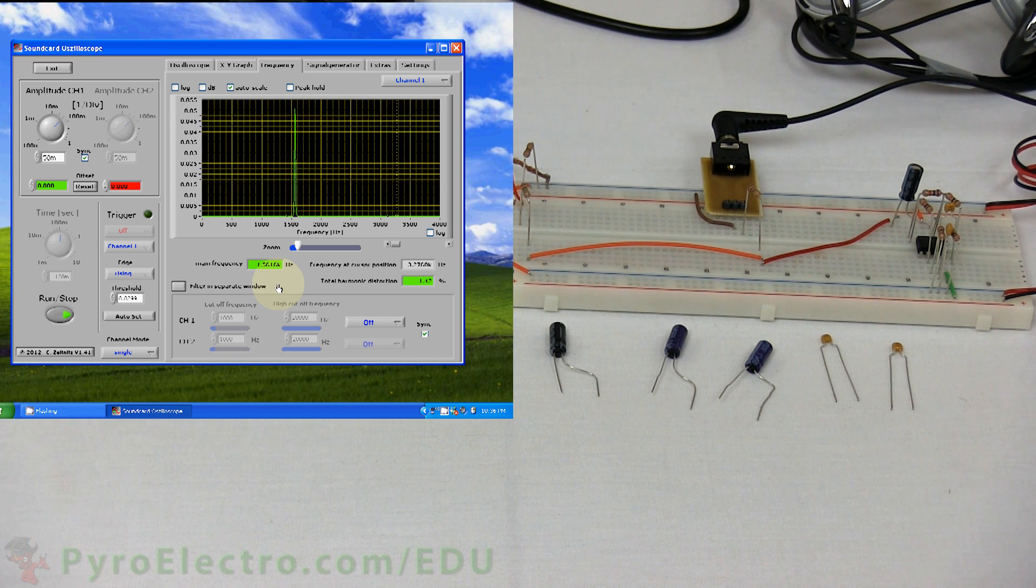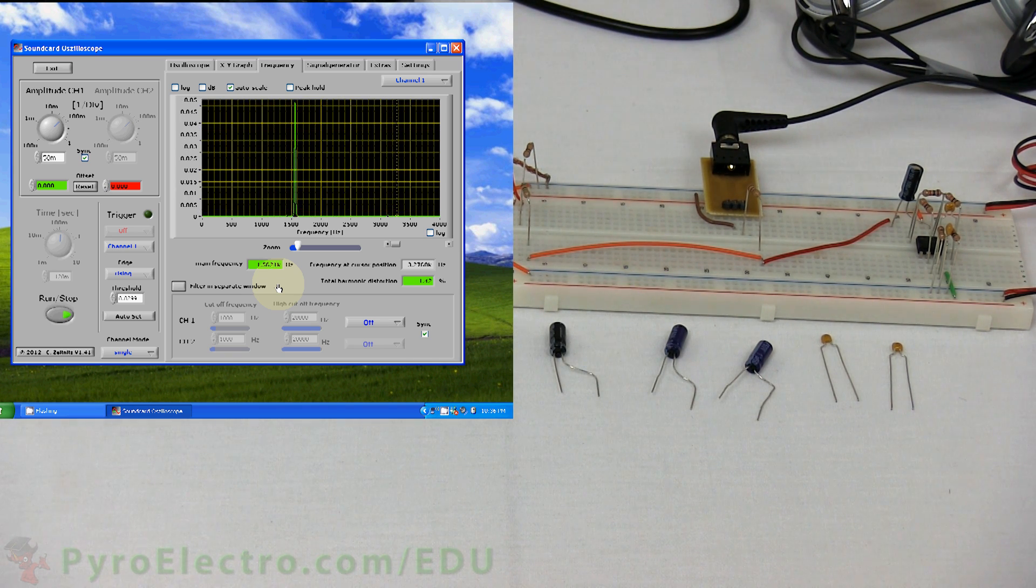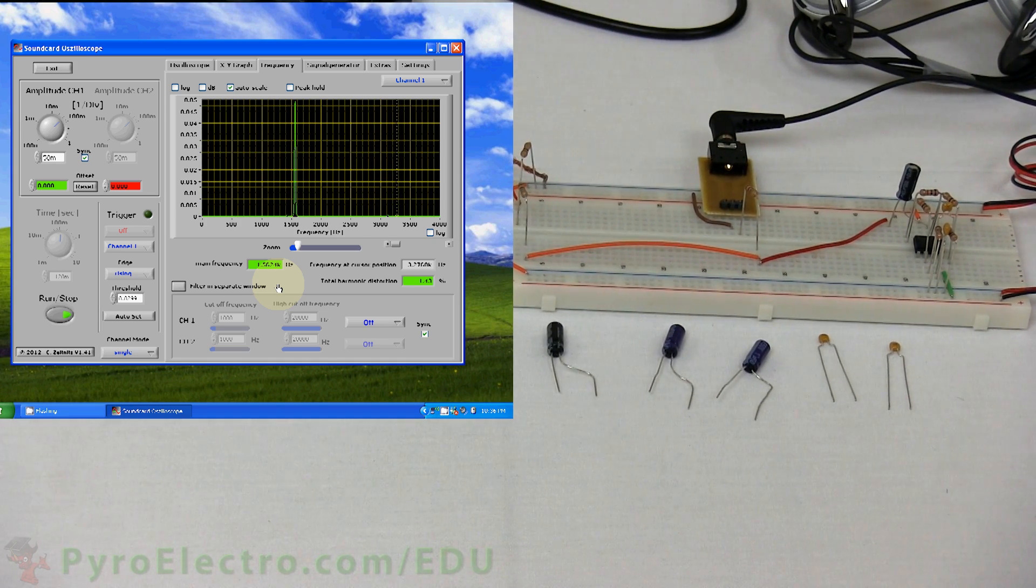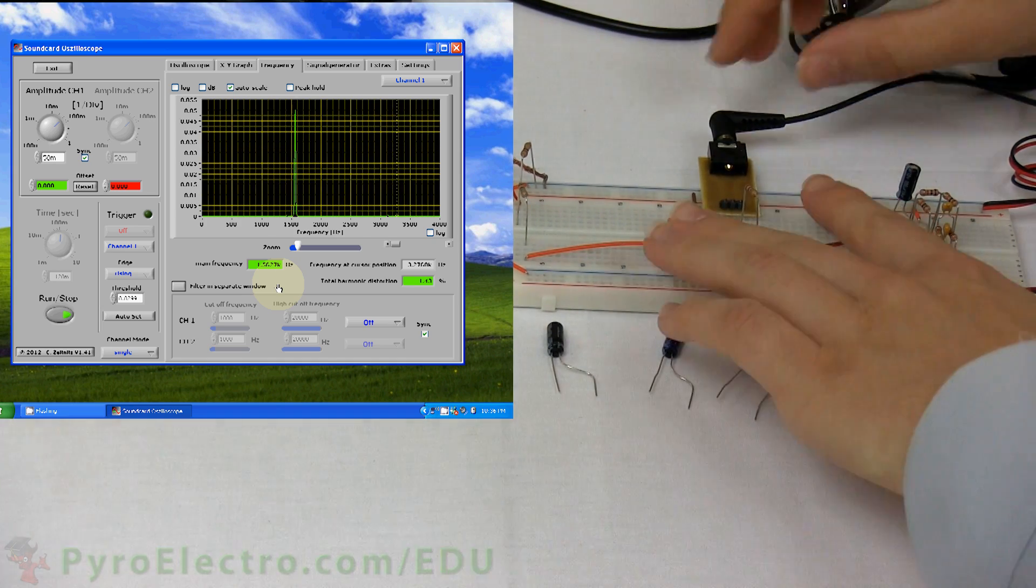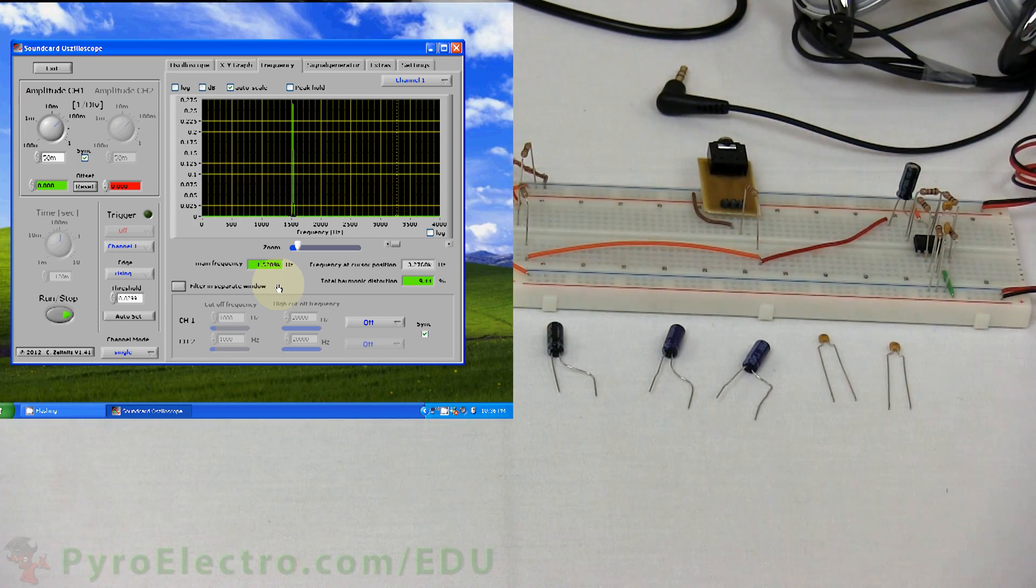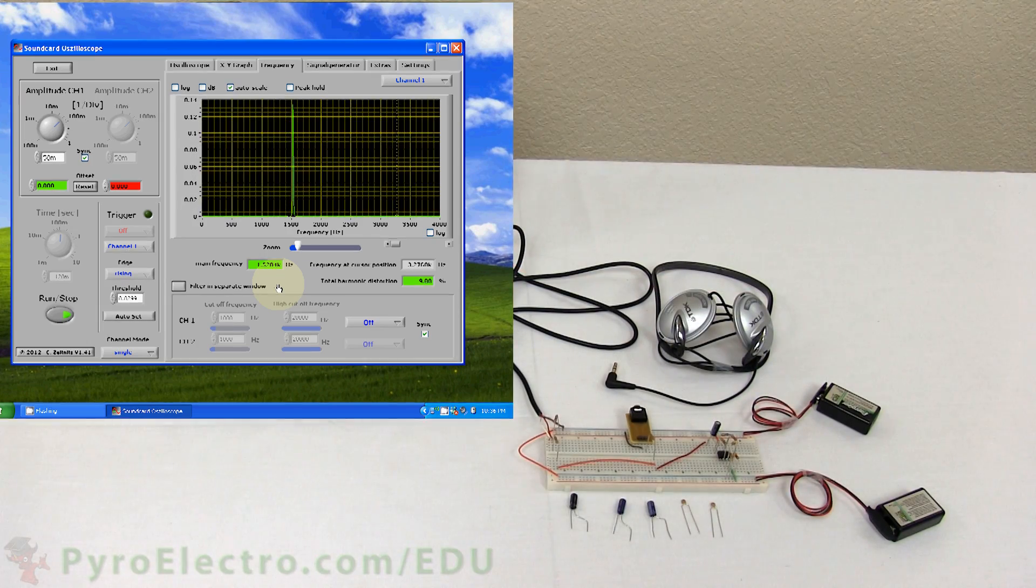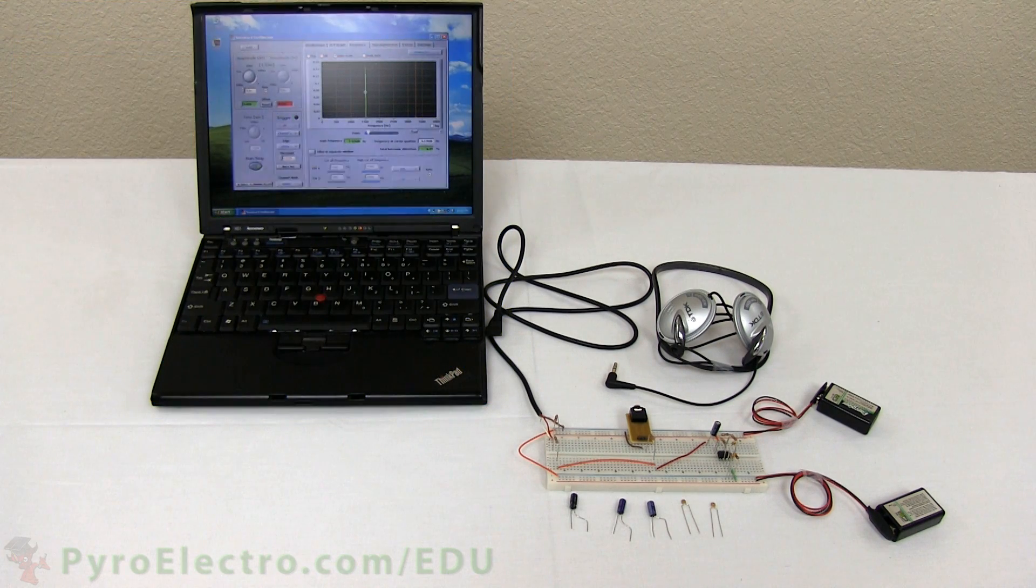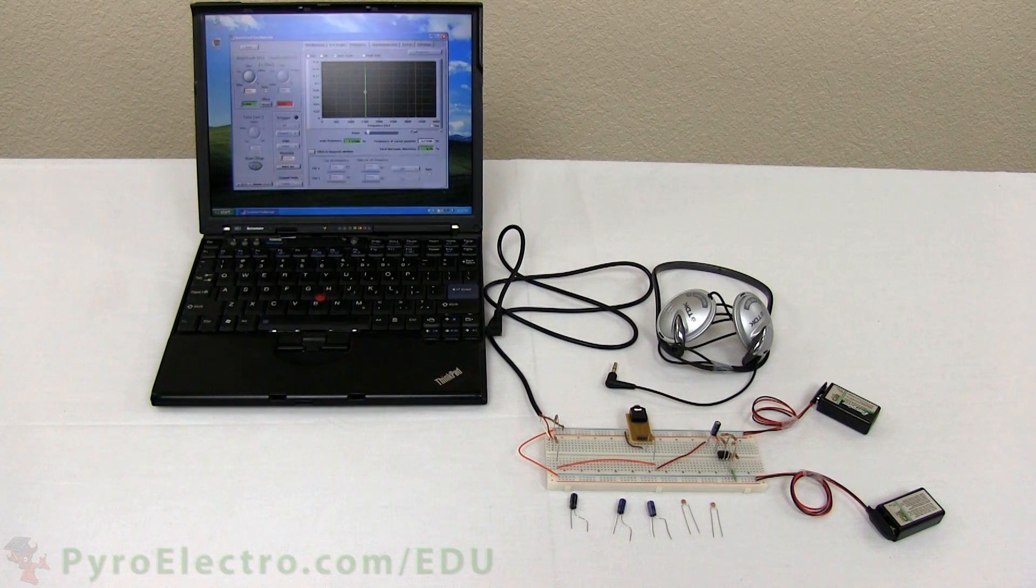Both high and low-pass filters are able to change the tone by filtering out certain frequencies. But what's important to take away from this experiment is that they do it differently. A 100 microfarad RC low-pass filter made the tone disappear, while a 100 microfarad RC high-pass filter allowed the tone to be heard loud and clear.